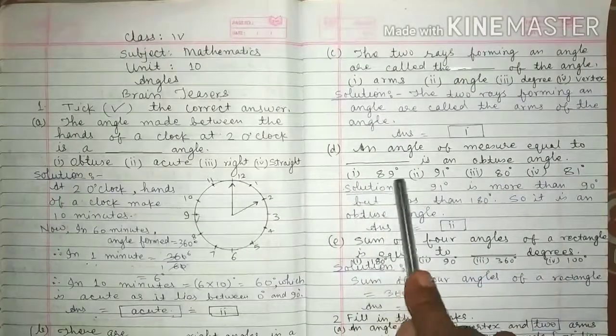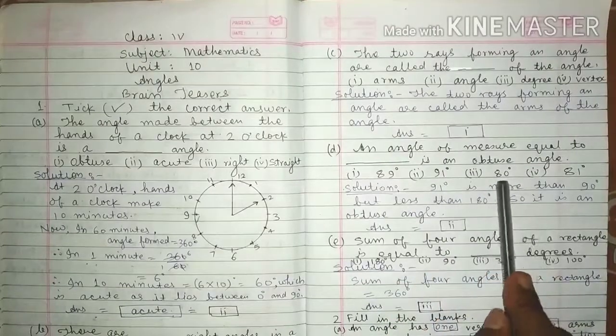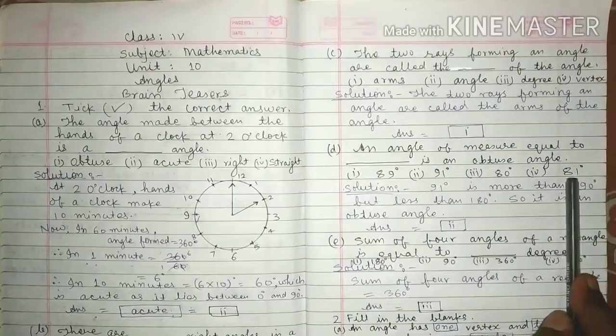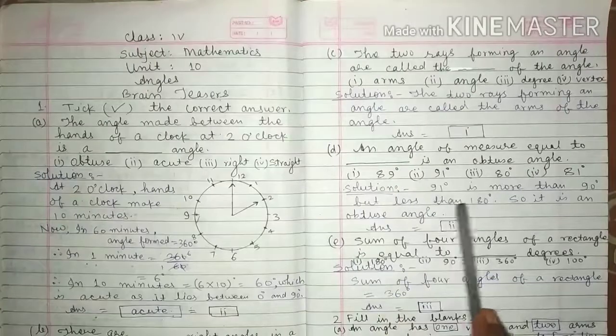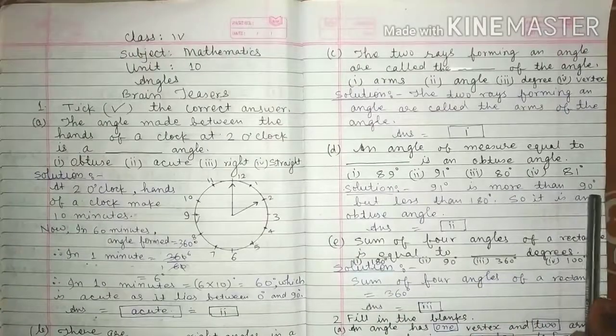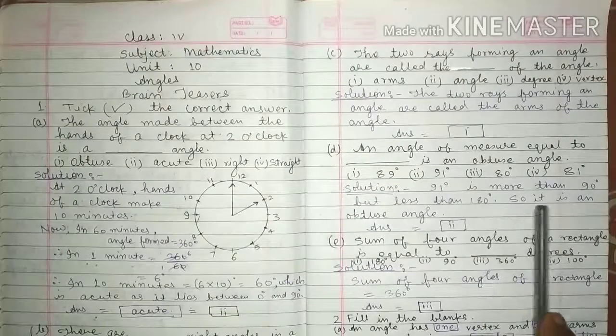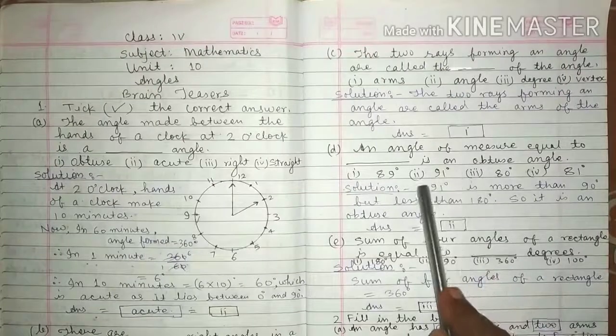First 89, second 91 degree, third 80 degree, fourth 81 degree. For the solution of this question we write 91 degree is more than 90 degree but less than 180 degree. So it is an obtuse angle. So correct answer is 2.